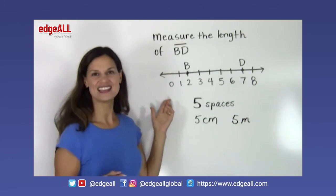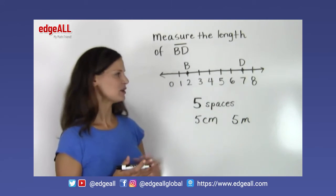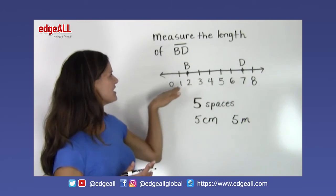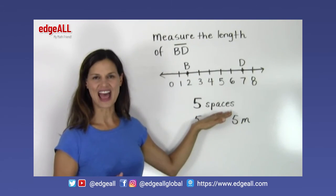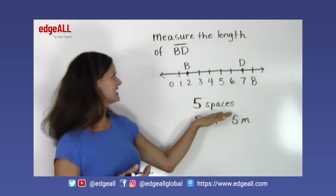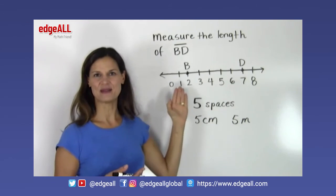So it depends on what unit you're measuring your line in, which will be indicated for you in your problems. If there are no units indicated, like in this case, we can simply give our answer as five spaces would be the measurement of the length of line segment BD.